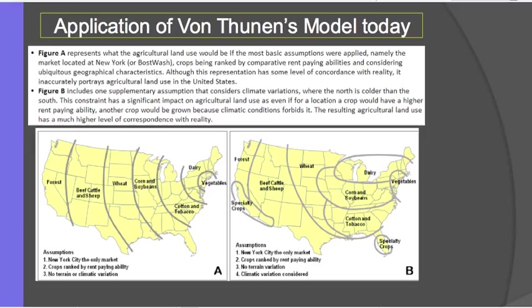So that is Von Thunen's model — an economic model of land use for agriculture based on the cost of the land. Closer to the market is more expensive, and the cost of transportation increases the further you are from the market area. The further you are from the market area, the more those transportation costs factor in.